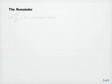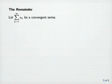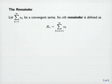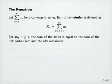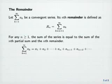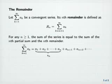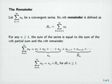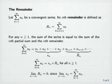The remainder. Let the sum from k equals 1 to infinity of a sub k be a convergent series. Its nth remainder is defined as r sub n equal to the sum from k equals n plus 1 to infinity of a sub k. For any n greater than or equal to 1, the sum of the series equals the nth partial sum plus the nth remainder. The limit as n goes to infinity of r sub n is equal to 0, since the limit as n goes to infinity of s sub n equals the sum of the series.